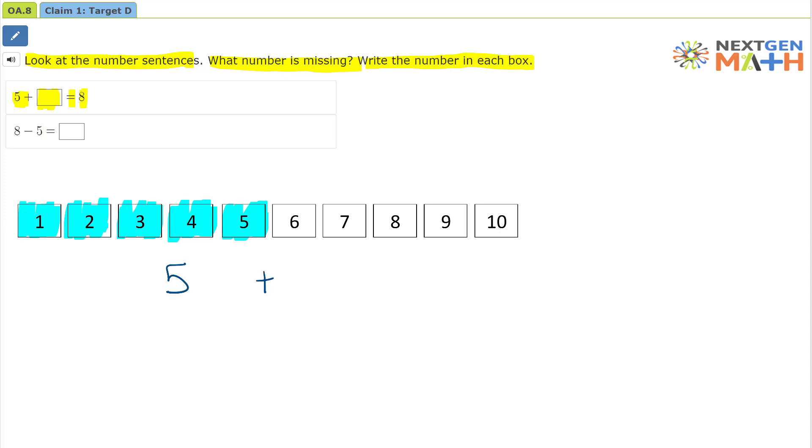Now we're going to add a certain amount to get to 8. 1, 2, 3 gets us to 8. Or 5 plus 3 equals 8. So our missing number for the first problem is 3.